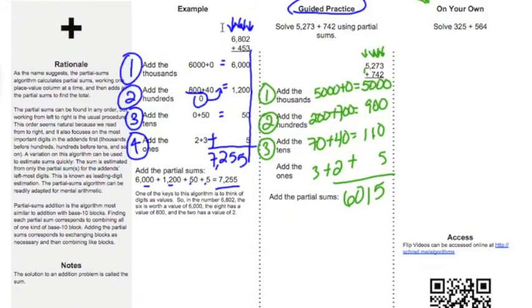All right, welcome back. Let's go ahead and work this one out on our own. 325, and I'm going to stack it, 564. I'm adding them together. I need to find partial sums.